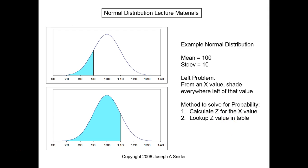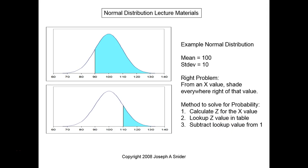Right hand problems is where you have some right shading past a certain number, and it doesn't matter whether it's a large shading or small shading. Any shading to the right, you have three steps in your method to solve for the probability: you calculate your Z and look it up same as in the left problem, but you add this additional step.